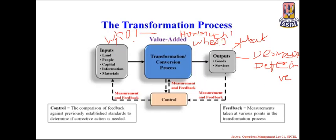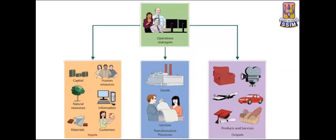In materials management, we have the latest trends such as MRP (Material Requirement Planning), MRP II (Manufacturing Resource Planning), and other inventory techniques. Each organization needs to follow the latest trends in the manufacturing industry; no company can survive without understanding what is going on in the industry. This visual represents the inputs, transformation process, and output.